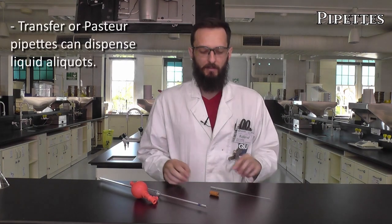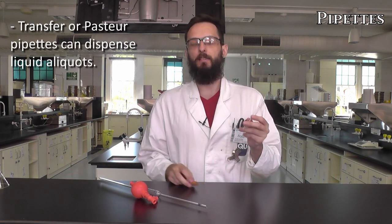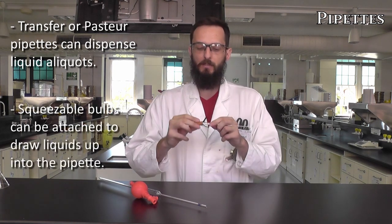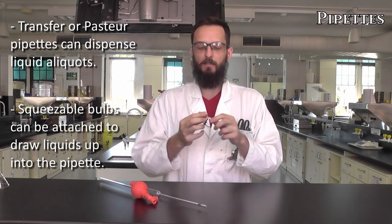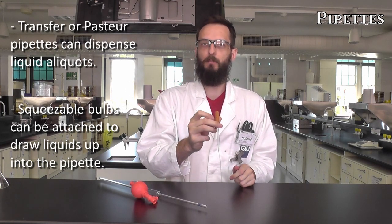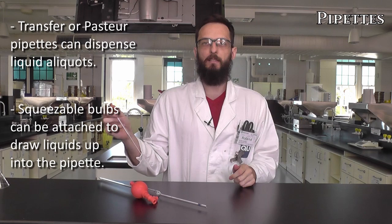When we want to transfer liquids from one place to another we can use pipettes. This is a transfer pipette, also known as a Pasteur pipette, and they're used in conjunction with these orange bulbs. All we need to do is gently twist the bulb onto the end, then we can squeeze the bulb, place it into our liquid, let go of the bulb, move it across, and squeeze again to dispense.